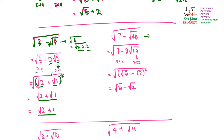Similarly for root of (7 minus root 40): 40 is 2 times 2 times 10, so take out the 2 to get 2 root 10. Then 10 is 5 times 2, and 7 is 5 plus 2. So you get (root 5 plus root 2) squared with a minus sign, giving (root 5 minus root 2). Remove the square and you have root 5 minus root 2.